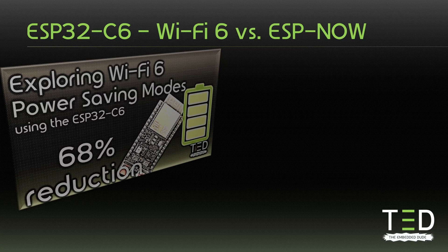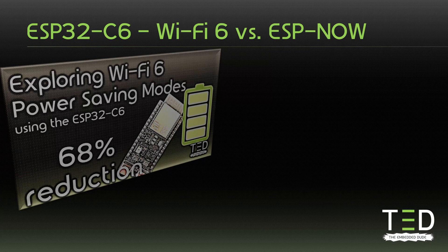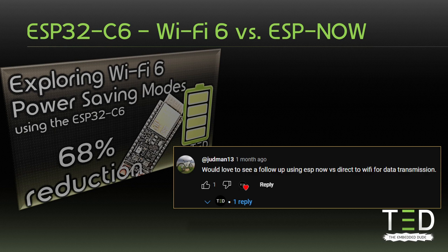In the last video I compared the power consumption of Wi-Fi 6 individual target wake time plus auto light sleep with a deep sleep approach. The power consumption for a device that periodically reports sensor data via MQTT could be reduced up to 68% using individual target wake time and auto light sleep. I got a comment under that video that it would be nice to add ESPNOW to the comparison, and I actually liked the idea and did it. So this video can be seen as a part 2 of the previous video with ESPNOW added to the comparison.